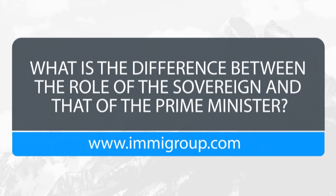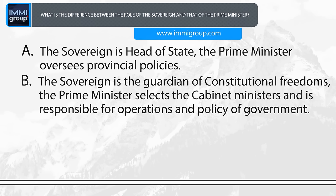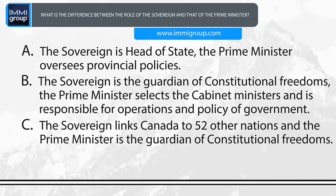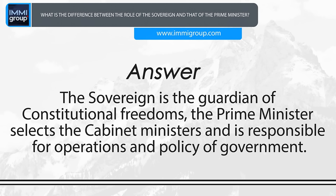What is the difference between the role of the sovereign and that of the Prime Minister? A. The sovereign is head of state; the Prime Minister oversees provincial policies. B. The sovereign is the guardian of constitutional freedoms; the Prime Minister selects the Cabinet Ministers and is responsible for operations and policy of government. C. The sovereign links Canada to 52 other nations; the Prime Minister is the guardian of constitutional freedoms. D. The sovereign is the guardian of constitutional freedoms; the Prime Minister selects Cabinet Ministers and is responsible for operations and policy of government.